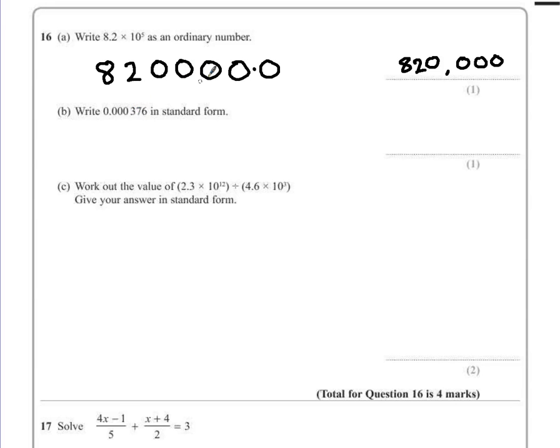So we're going to put a decimal point between the 3 and the 7 to give us 3.76 multiplied by 10. Now because the number is getting smaller we're going to have to have a negative power to show that the number is getting smaller, but how many times do we need to jump.